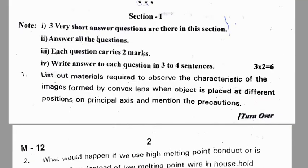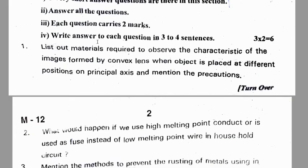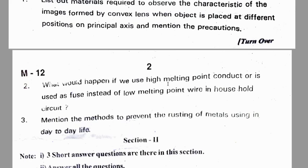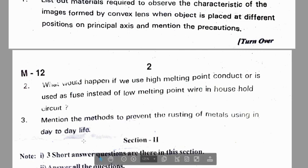This is the Medchal district pre-final one question paper. First question: list out materials required to observe the characteristics of the image formed by a convex lens when an object is placed at different positions on the principal axis, and mention the precautions. What would happen if we use high melting point conductors instead of low melting point wire as a fuse in a household circuit? Mention the methods to prevent rusting of metals used in day-to-day life.